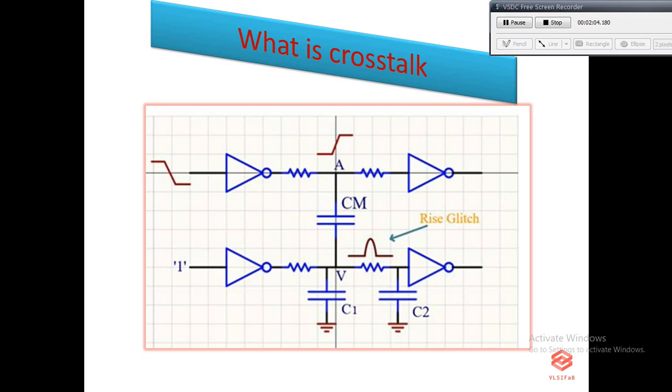Wires due to capacitive coupling. Like you can see in the diagram, two signals are going parallel. Because of the upper signal, we can see some glitch in the lower signal. This unwanted glitch is called crosstalk.